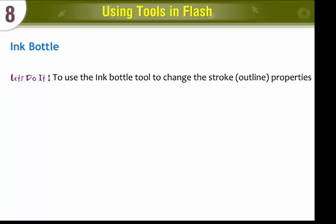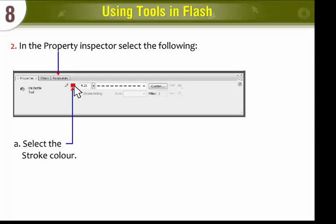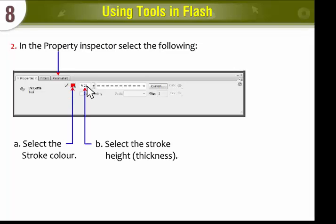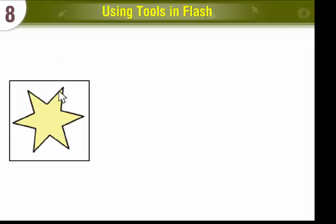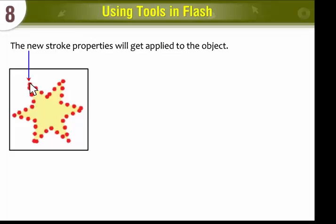Ink Bottle Tool. To use the Ink Bottle Tool to change the Stroke and outline properties, select the Ink Bottle Tool. In the Property Inspector, select the Stroke Color, the Stroke Height (Thickness), and the Stroke Style. Click on the object whose Stroke Properties you want to change. The new Stroke Properties will get applied to the object.